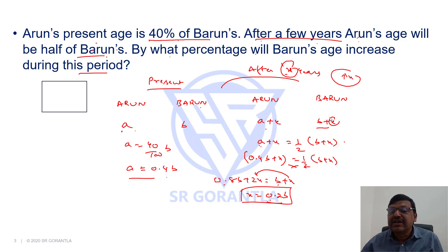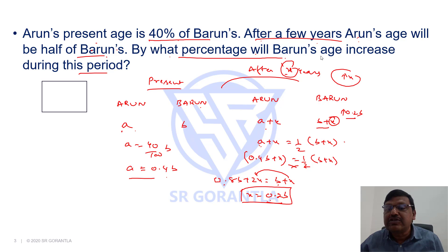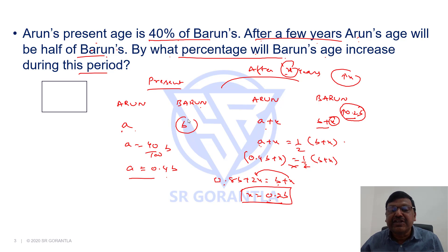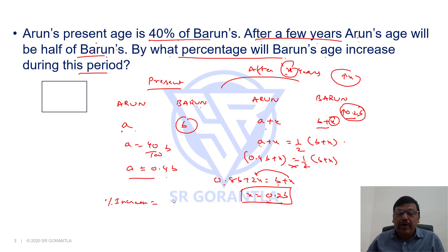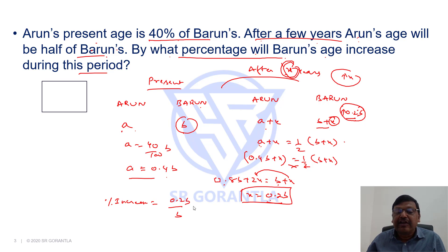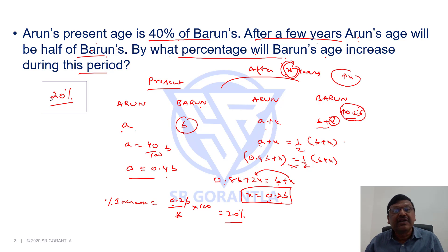The increase in Barun's age is X, which equals 0.2B. The question asks by what percentage Barun's age is increasing. The percentage increase is the increase, 0.2B, divided by the original age B, multiplied by 100. B gets cancelled, so 0.2 into 100 is 20%. Our answer is 20%. Simple question, right? Thank you.